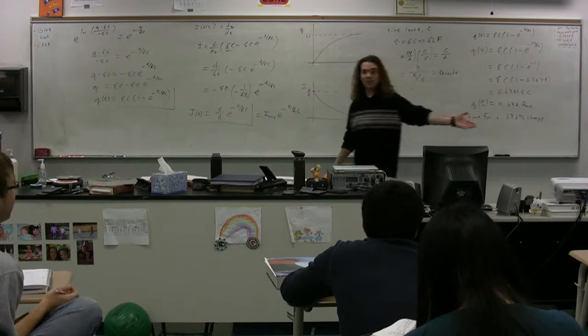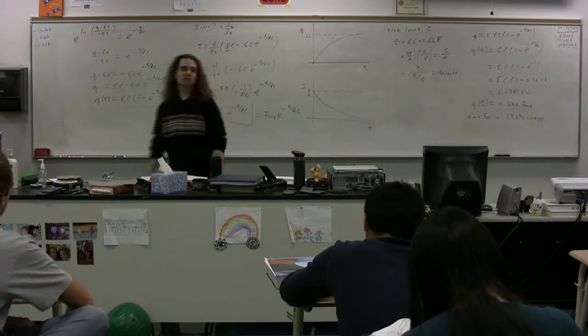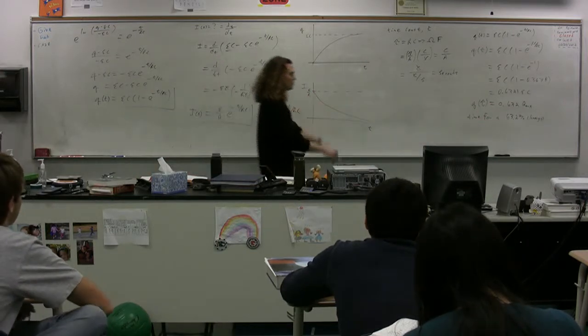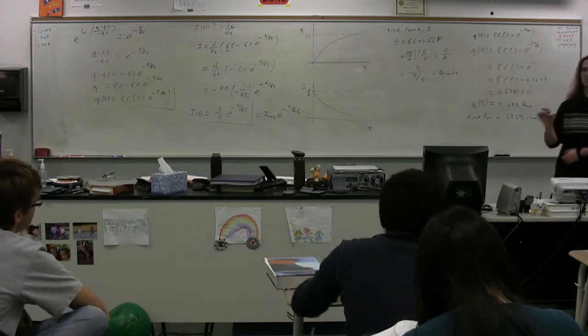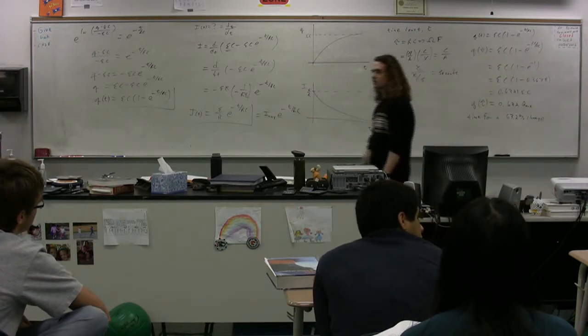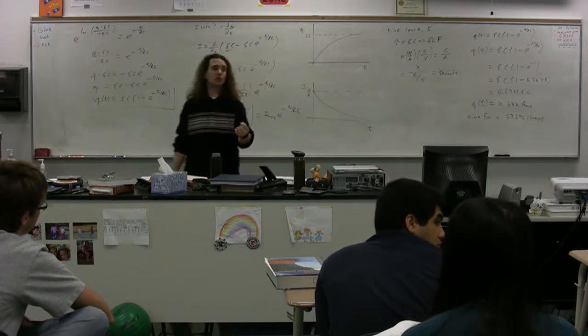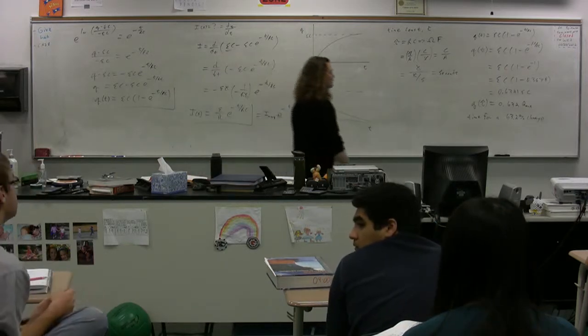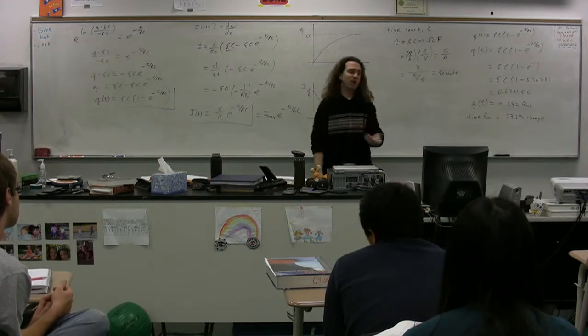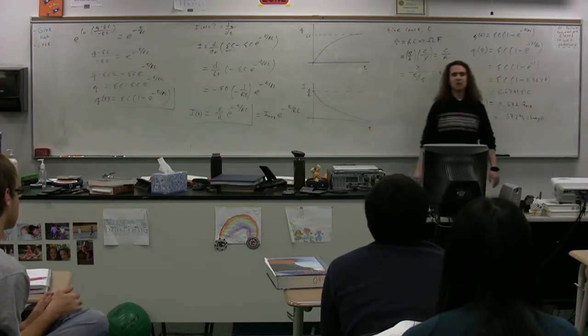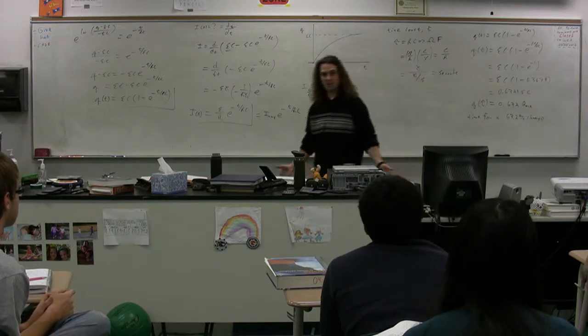By definition, we just showed it, right? The time constant, it goes through the charge, gets to 63.2% of its maximum value in the time that is the time constant for this RC circuit. At two time constants, it would be a 63% change, but then you'd have another 63% change, and you could figure out what it was. It would be 1 minus e to the negative 2, as opposed to 1 minus e to the negative 1.